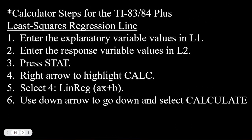To find the line of best fit on our calculators, first enter the explanatory variable in the L1 column under the STAT menu, then enter the response variable values into the L2 list. Then press STAT, use the right arrow to go over to CALCULATE, and select number four — the linear regression (LinReg AX+B), which is slope-intercept form. Use the down arrow to select CALCULATE, and that gives us our regression equation.